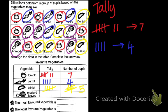Now mustard leaves. How many pupils like mustard leaves? One, two, three, four, five — also five. How to write five in tally? One, two, three, four, five. This is how you write it in tally.